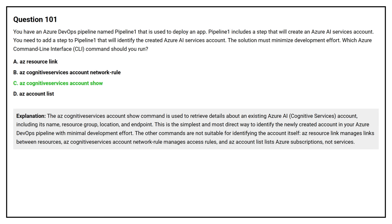The other commands are not suitable for identifying the account itself. AZ Resource Link manages links between resources. AZ Cognitive Services Account Network Rule manages access rules. AZ Account List lists Azure subscriptions, not services.